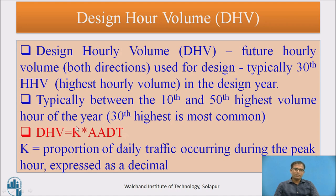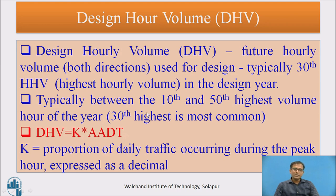Design Hourly Volume equals K multiplied by AADT, where K is the proportion of daily traffic occurring during the peak hour, expressed as a decimal. You have the AADT, and you find the K factor considering the 30th highest hourly volume. That K factor, multiplied by the AADT, gives the DHV.